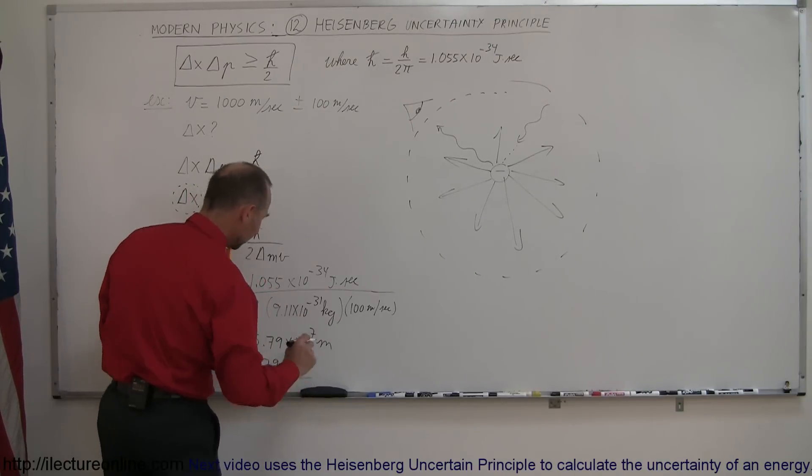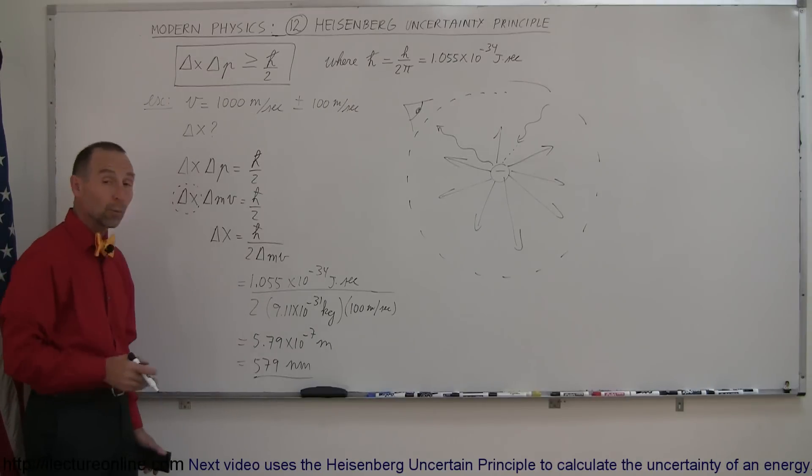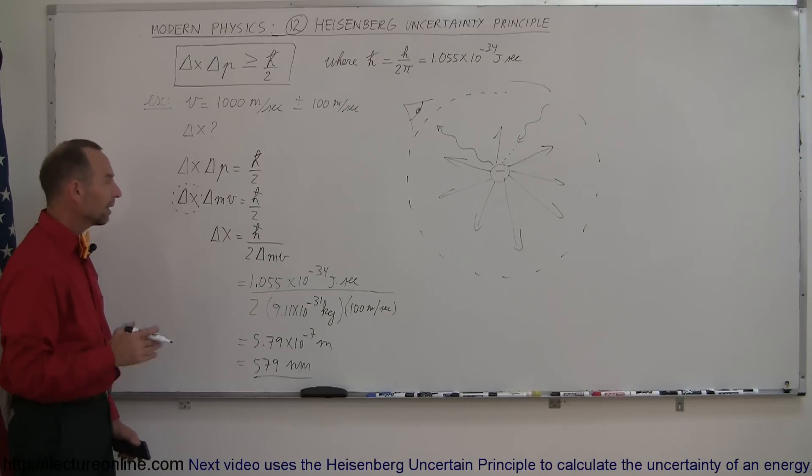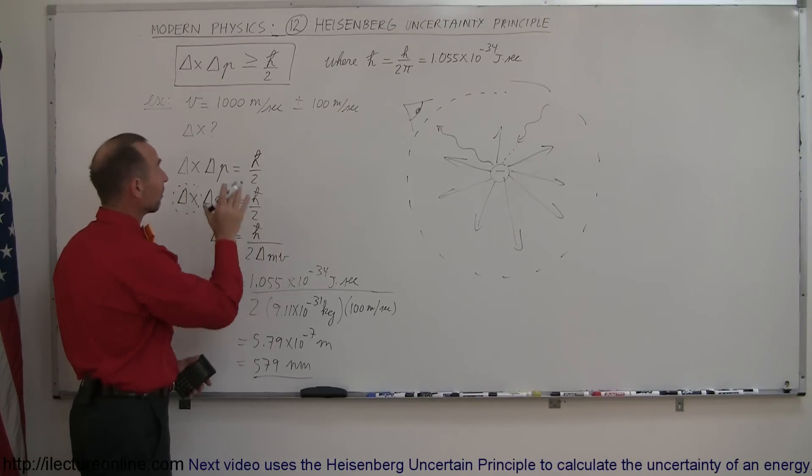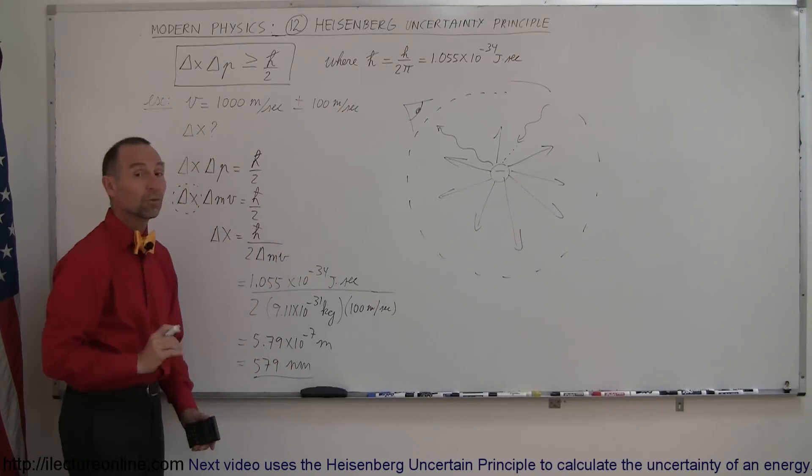So what does that mean? Well, that's about the wavelength of visible light, but let's put things in perspective. Let's say that we find the wavelength of this electron moving at 1,000 meters per second, and then compare that to the uncertainty in its position.